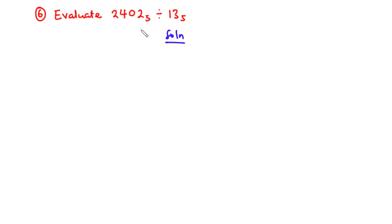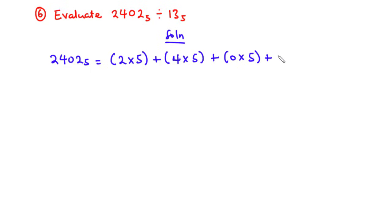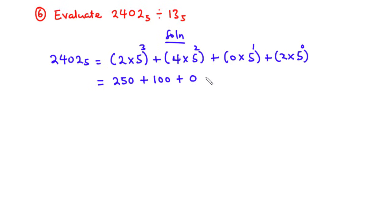Now, let's convert 2402 base 5 to base 10. That is going to be 2 times 5³ plus 4 times 5² plus 0 times 5¹ plus 2 times 5⁰. Starting from the right-hand side, we have positions 0, 1, 2, and 3. Now let's simplify: 5³ is 125 times 2, we have 250. 5² is 25 times 4 is 100. 5¹ is 5 times 0 is 0. 5⁰ is 1 times 2 is 2. So 250 plus 100 plus 0 plus 2 is 352 base 10. So 2402 base 5 is equal to 352 base 10.